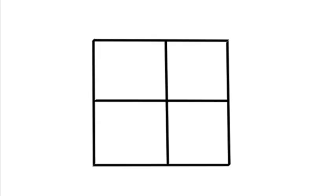So let's take a look at a Punnett square. What you really need to do is start out with this box — it almost looks like an unfinished tic-tac-toe board. You have four different boxes, and what you're going to do with those four boxes is put different genes in them and use those genes to predict outcomes for genotype and phenotype.